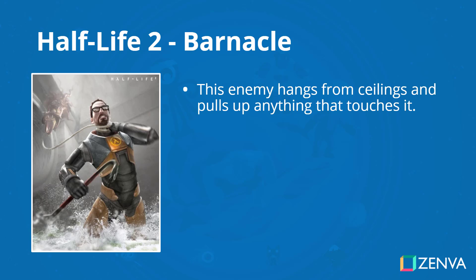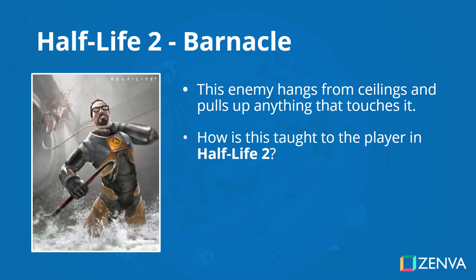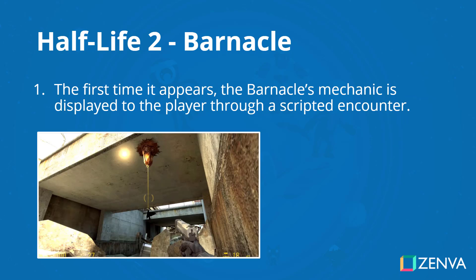Let's look at the Half-Life 2 barnacle enemy. This enemy hangs from ceilings and pulls up anything that touches it. How is this taught to us in-game? The first time the barnacle appears, its mechanic is displayed to the player through a scripted encounter. A bird actually flies into the barnacle's tentacle, which then sucks it up. In this case, the player is not in danger at all. They see this and then realize that if an object or a person interacts with the barnacle, it will begin to suck them up.